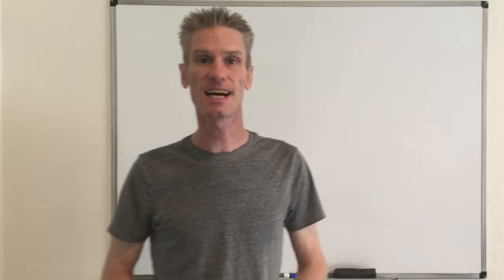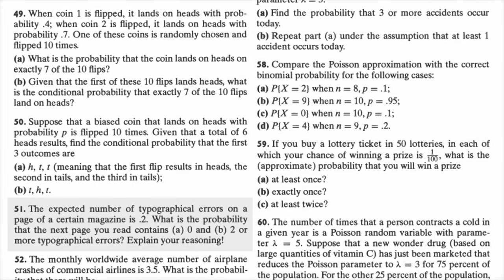Hi everyone, welcome back to my YouTube videos. In this video, I'm going to solve exercise 4.51 of the textbook 'First Course in Probability.' In this problem, we assume that the expected number of typos on a given page of a magazine is equal to 0.2, and the goal is to compute the probability that a given page has zero typos or two or more typos.